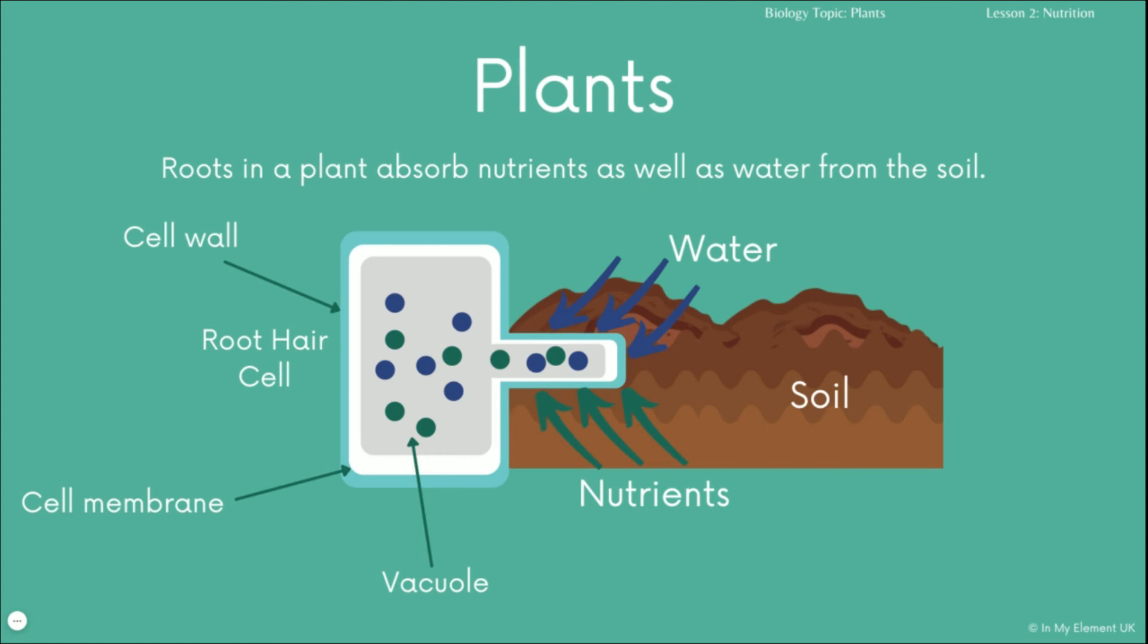And there's the vacuole where it will hold some of the liquids, so the water or the nutrients in solution. You can see here you've got the blue circles representing the water and the green circles representing the nutrients. What you've also got, which is probably the most important part, is this root hair extension.